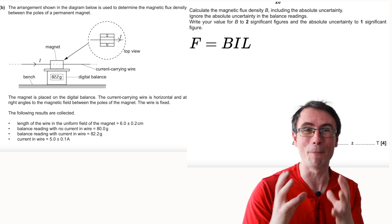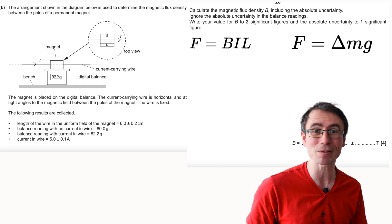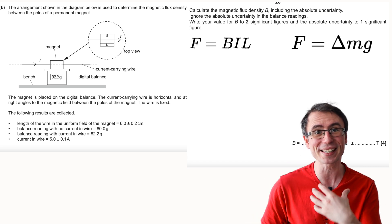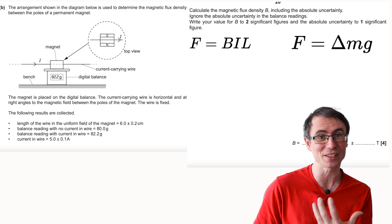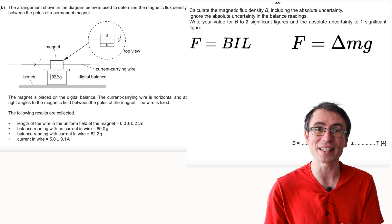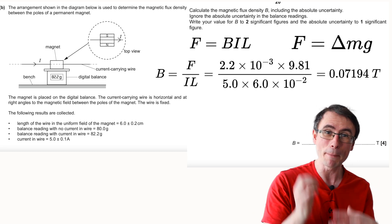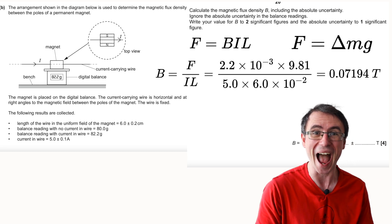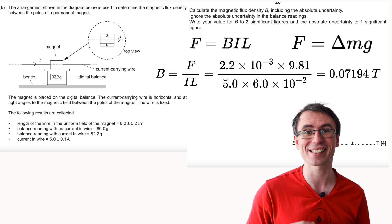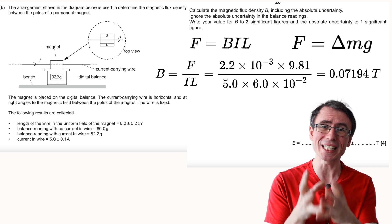We can start off by using the good old F equals BIL equation. The magnetic force in this case will be equal to the difference in the mass scale balance readings multiplied by g, and we can then rearrange this equation for the flux density B, plug in some values and get the right answer.